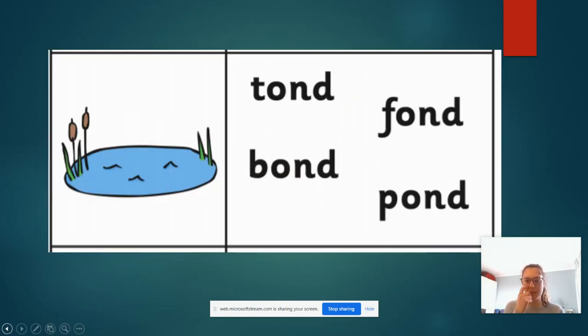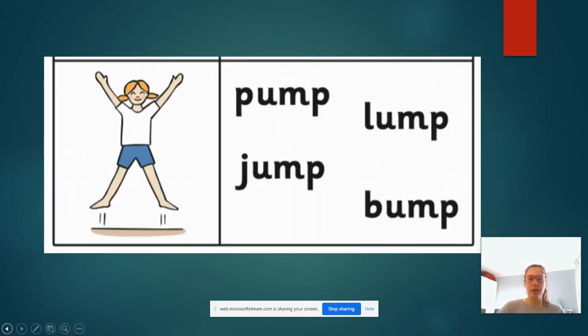Now, we are nearly there everybody. Let's see if we can sound out some of these words. Remember, give it a go on your own first before just listening to me. So, it says t-o-n-d, tond. F-o-n-d, fond. B-o-n-d, bond. P-o-n-d, pond. Now, what does that picture show? It, in fact, shows you a picture of a pond.